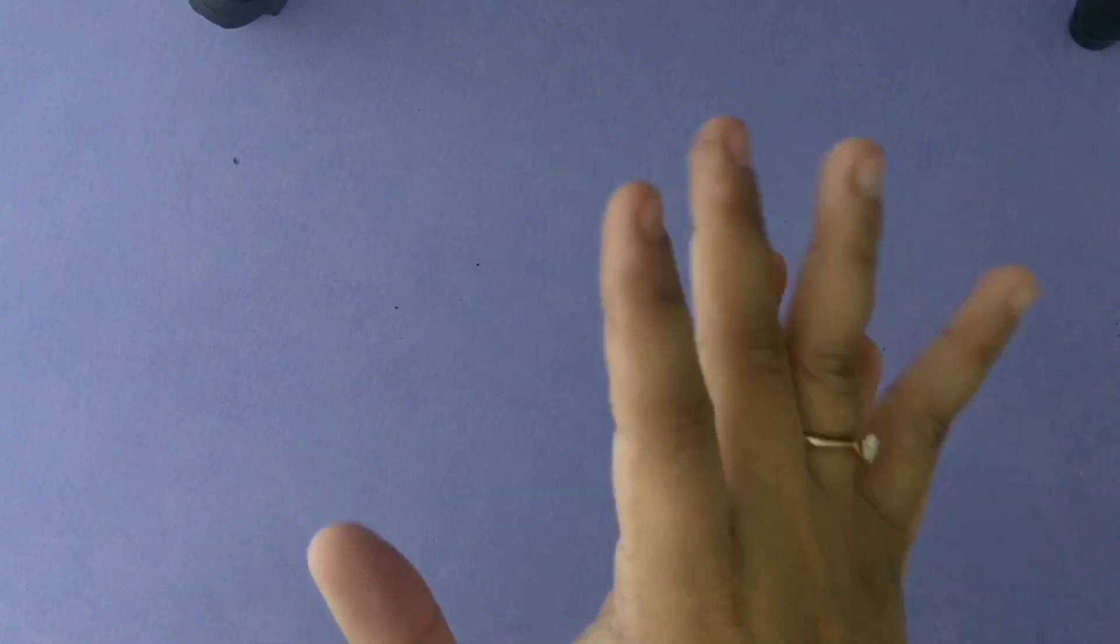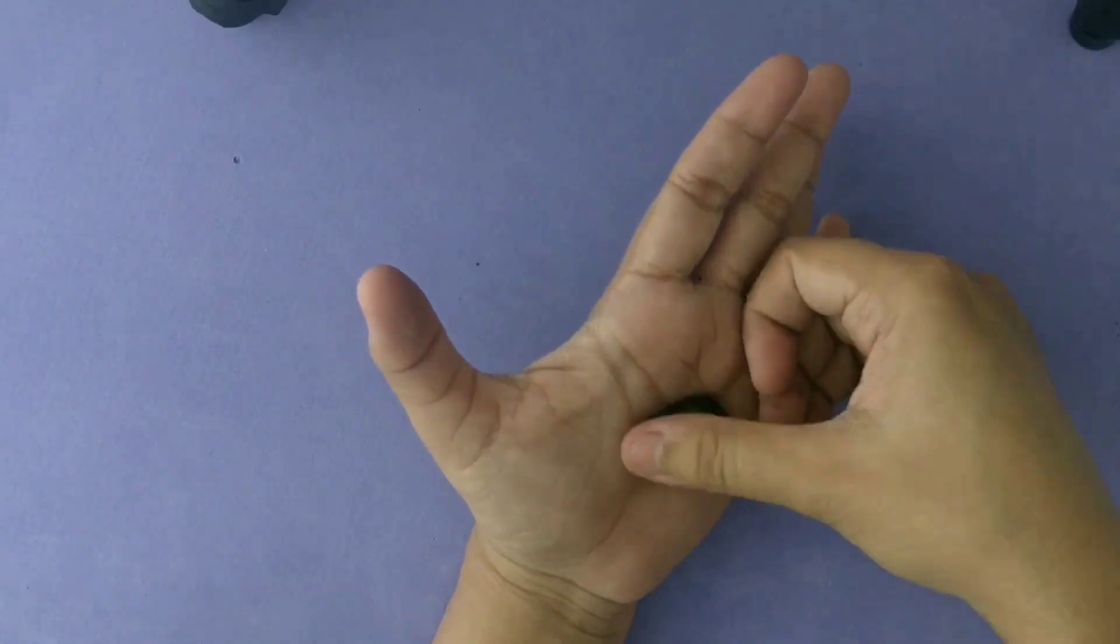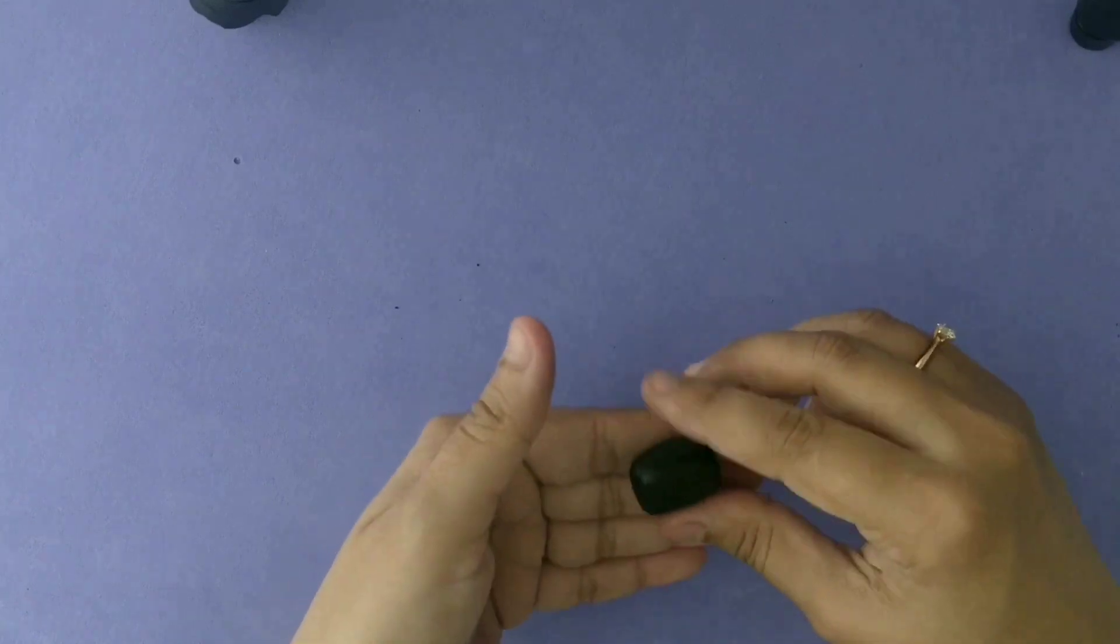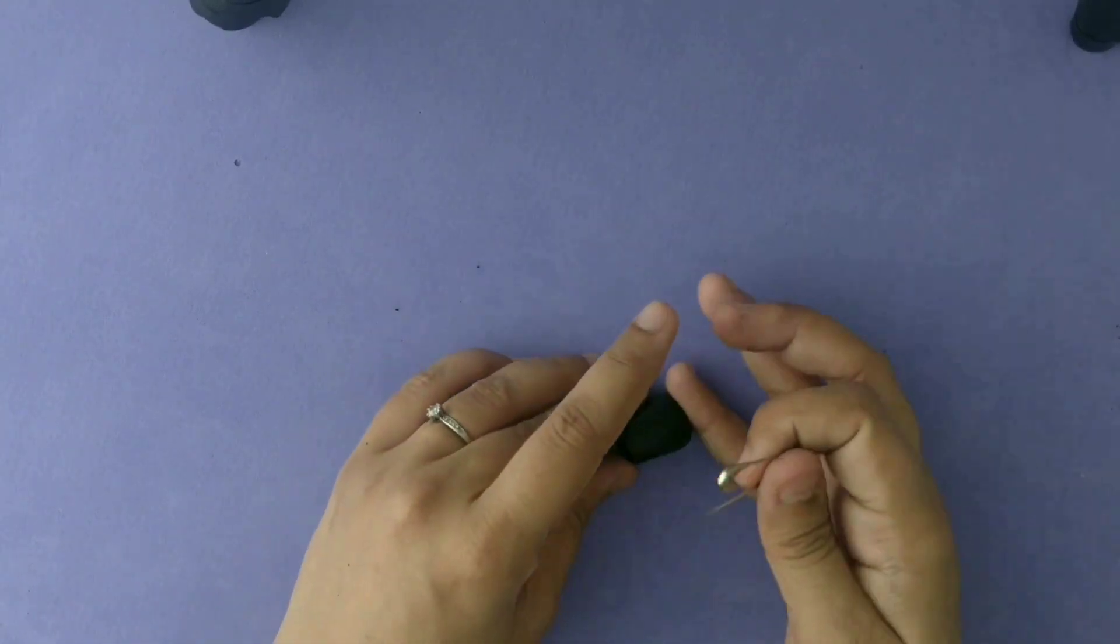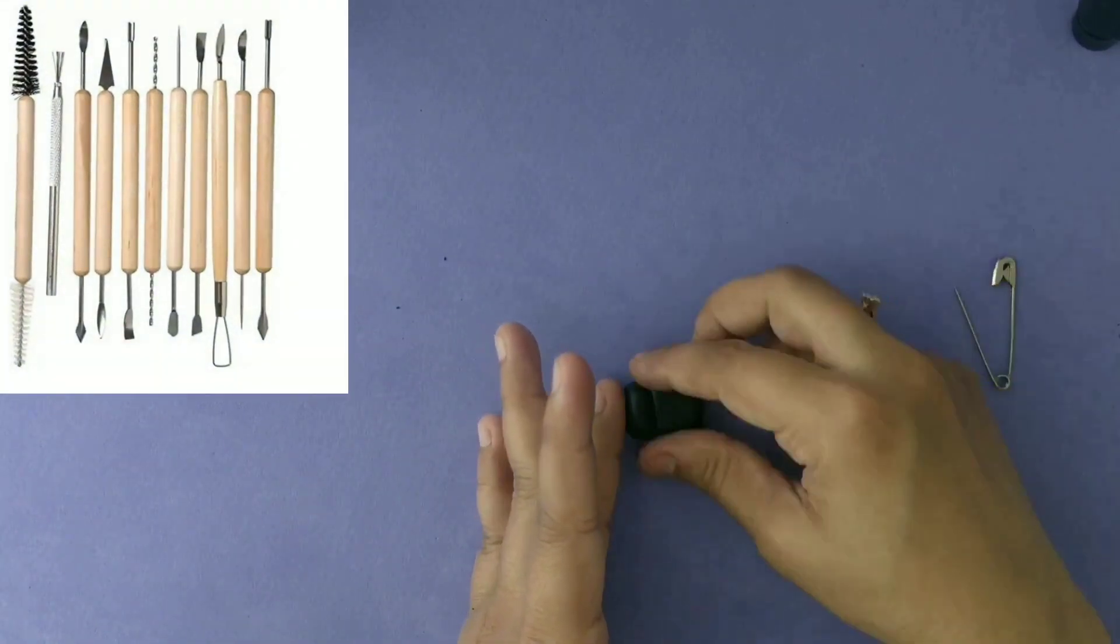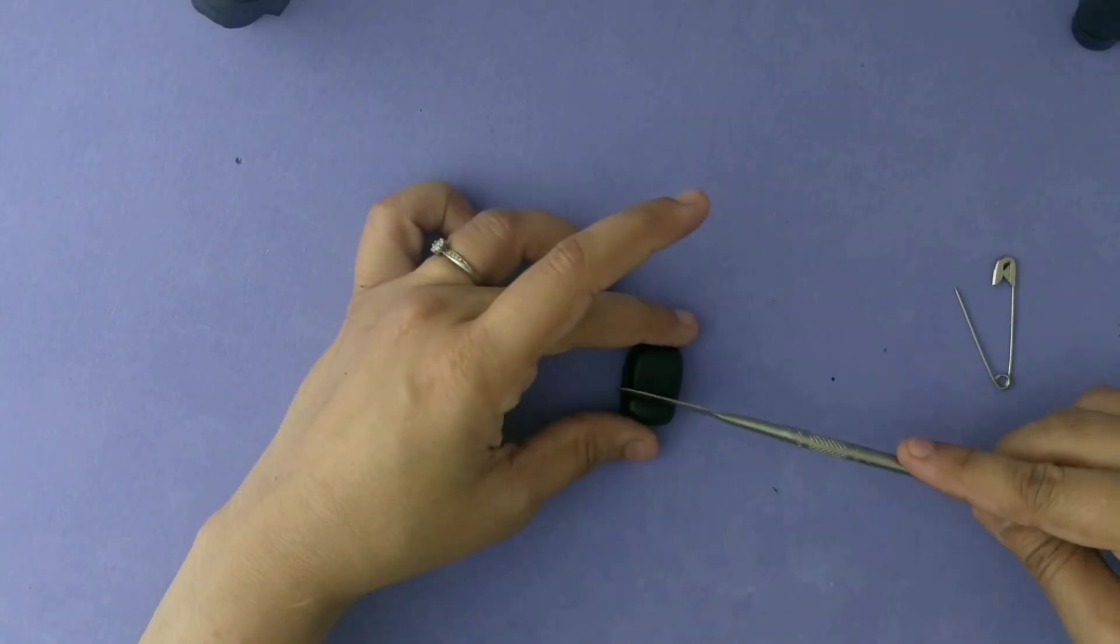Initially we are making a block which will serve as the main camera part. For giving textures you can use any kind of sculpting tools. If you don't have them you can even use a safety pin or a toothpick as you can see here.